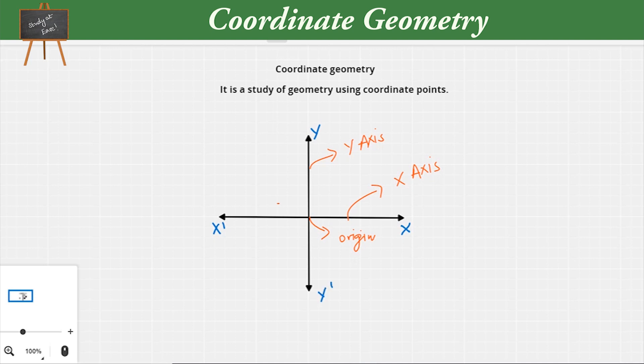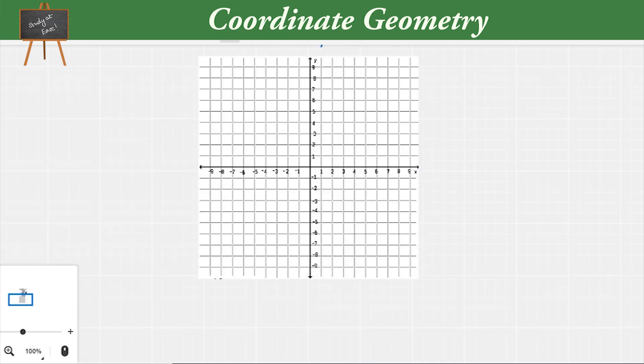Now if you look at this picture, you can see that the whole plane is divided into four parts. These parts are called as quadrants: the first quadrant, the second quadrant, the third quadrant, and finally the fourth quadrant, going anticlockwise if you look at the pattern.